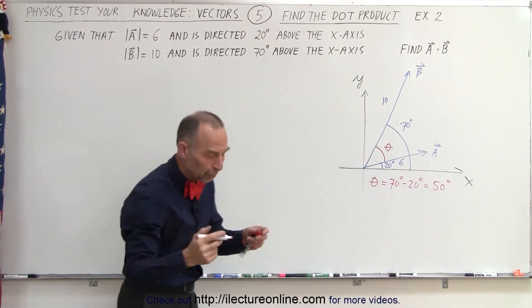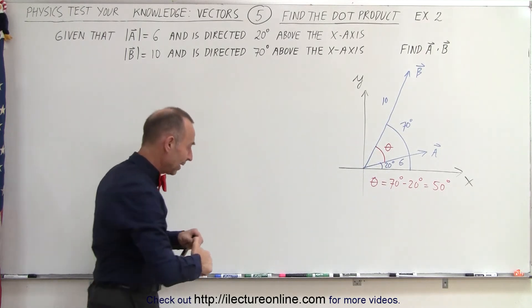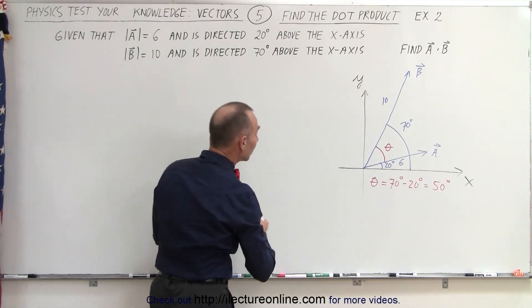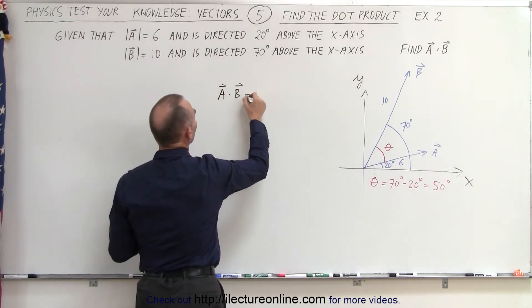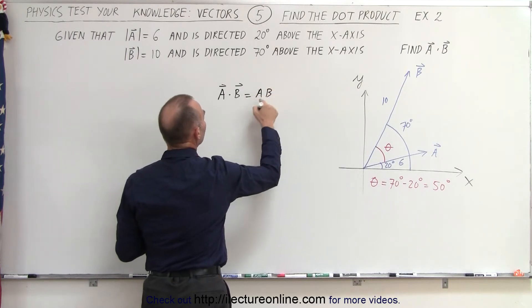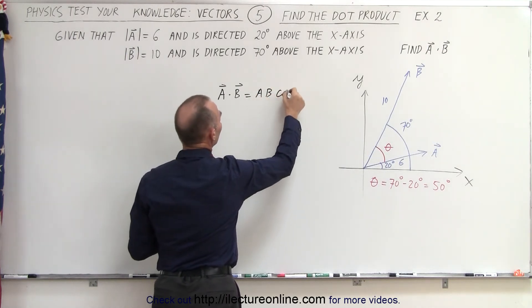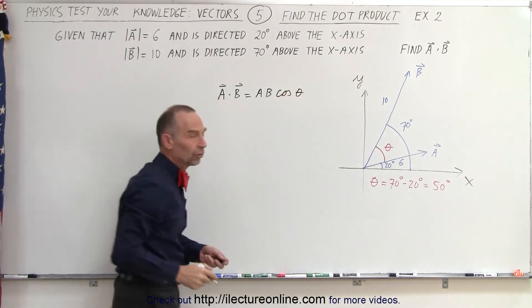So you need to establish the angle between the two vectors. Why is that? Well, that is because we know that the dot product A dot B is equal to A times B, the magnitude of A times the magnitude of B, times the cosine of the angle between the two vectors.